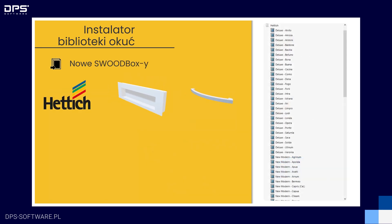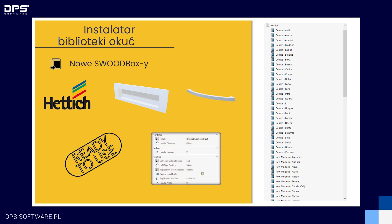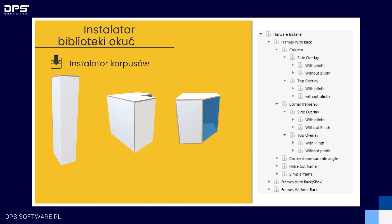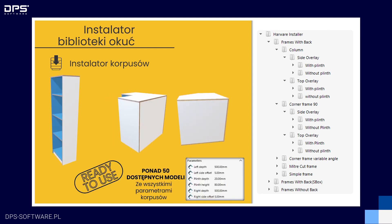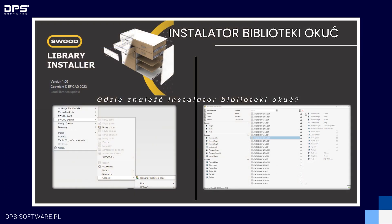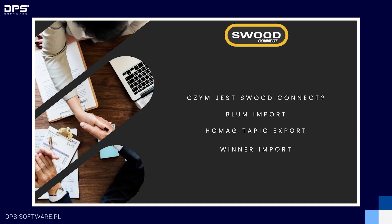Wprowadzono także nowe SWUT-boxy producenta HETTICH — mamy tutaj całą listę przeróżnych SWUT-boxów. Na końcu instalator korpusów, który pozwala nam na pobranie różnych przykładowych korpusów; dostępnych jest ponad 50 modeli. Aby znaleźć ten instalator, należy przejść do narzędzi SWUT Design, następnie Connect i wybrać instalator biblioteki Okuć. Włączy się oddzielna aplikacja z listą parametrów i listą konkretnych SWUT-boxów, które możemy pobrać, zatwierdzić i zostaną one dodane do naszej biblioteki — oczywiście w języku angielskim.